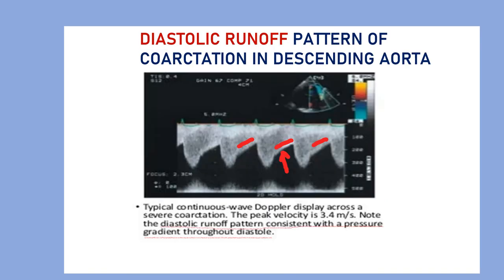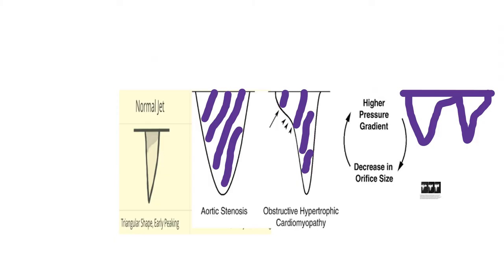Another distinct Doppler signal that we should diagnose at a glance is seen when performing CW Doppler of the descending aorta in the suprasternal window. The diastolic runoff seen here is very important because it is consistent with a pressure gradient throughout diastole, and this indicates severe coarctation of the aorta.